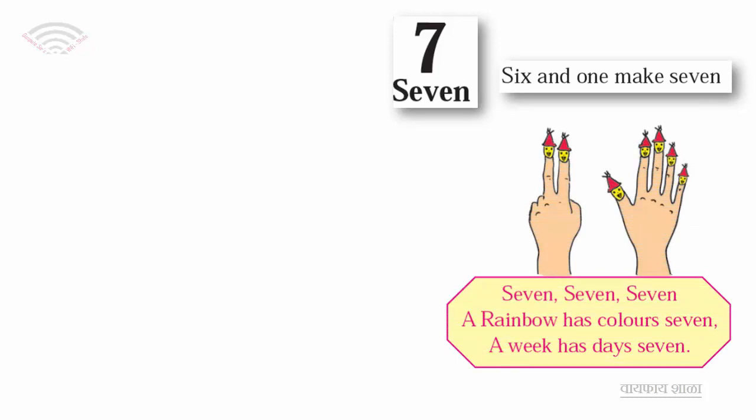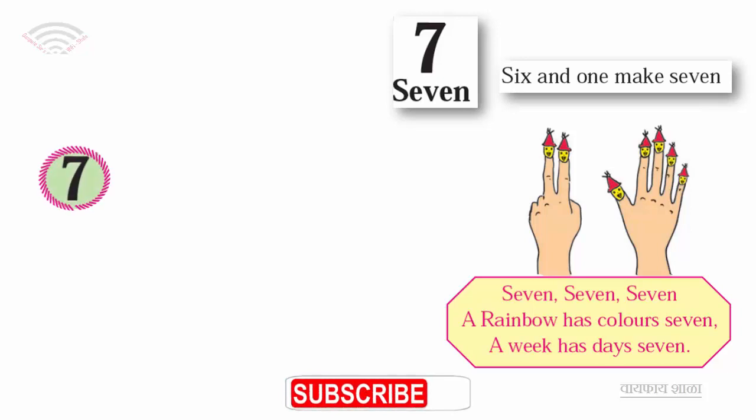A rainbow has 7 colors. A week has 7 days.